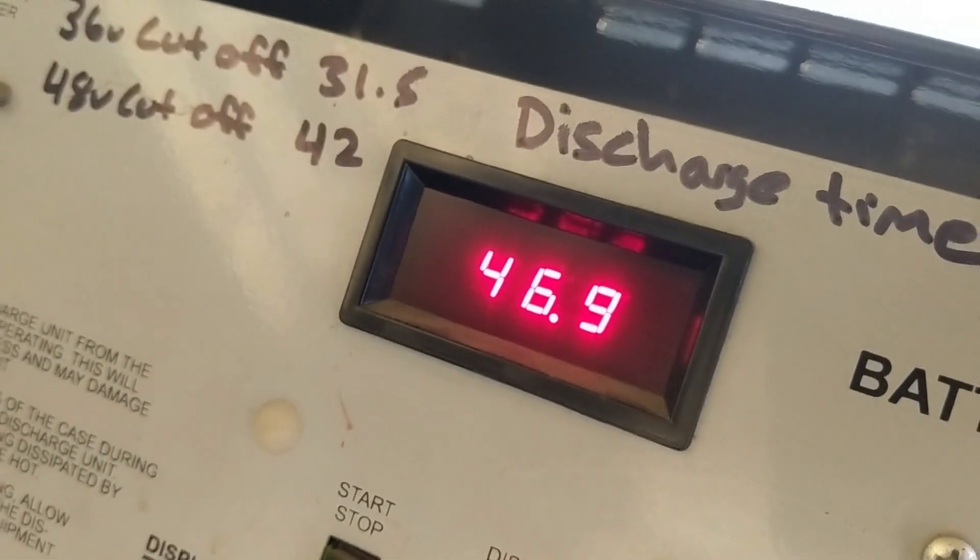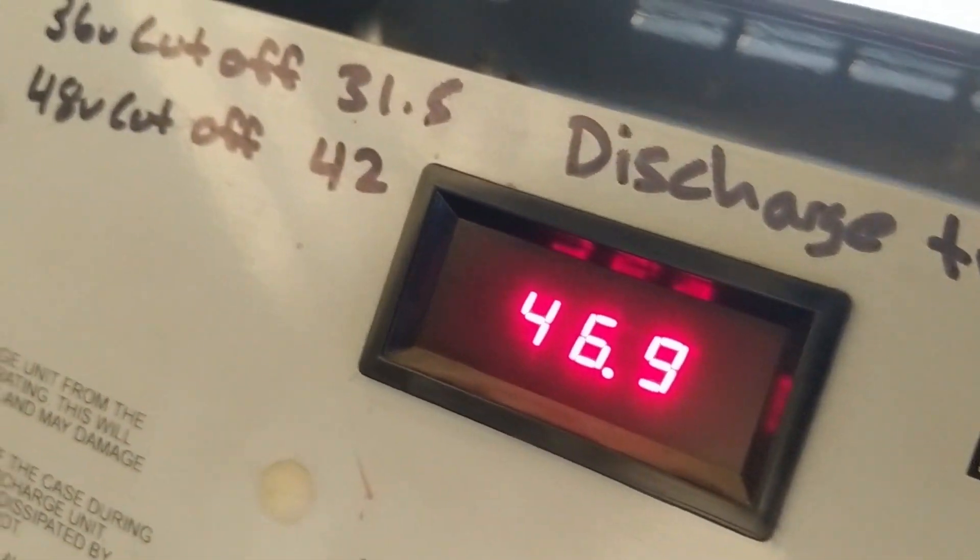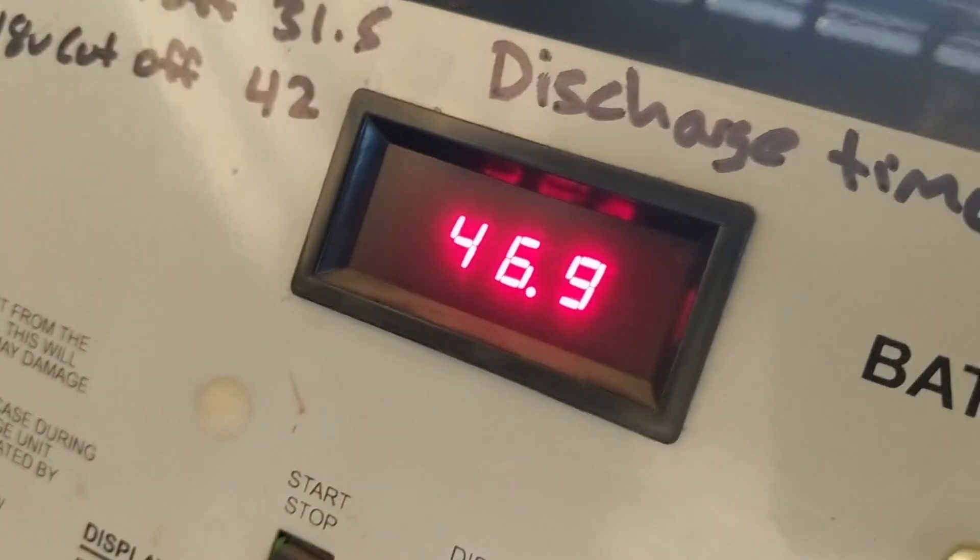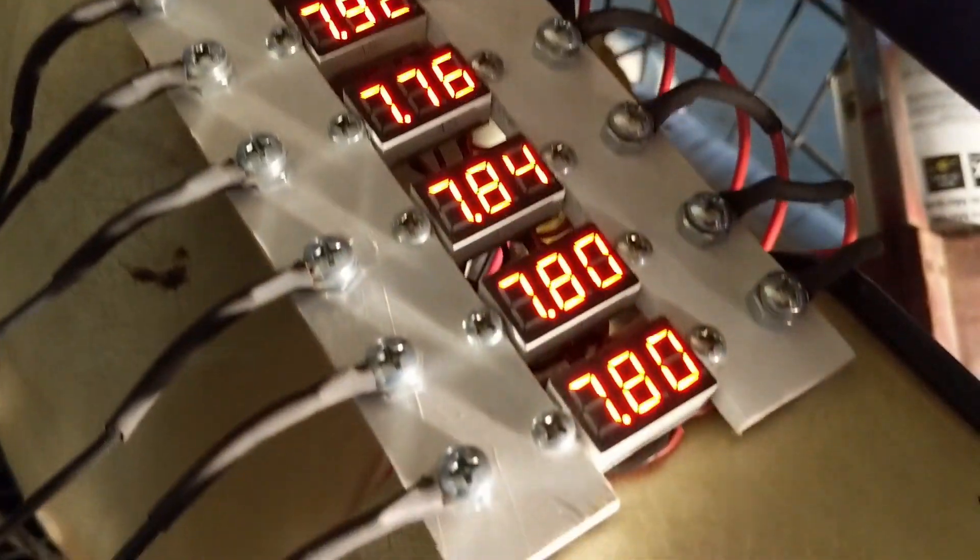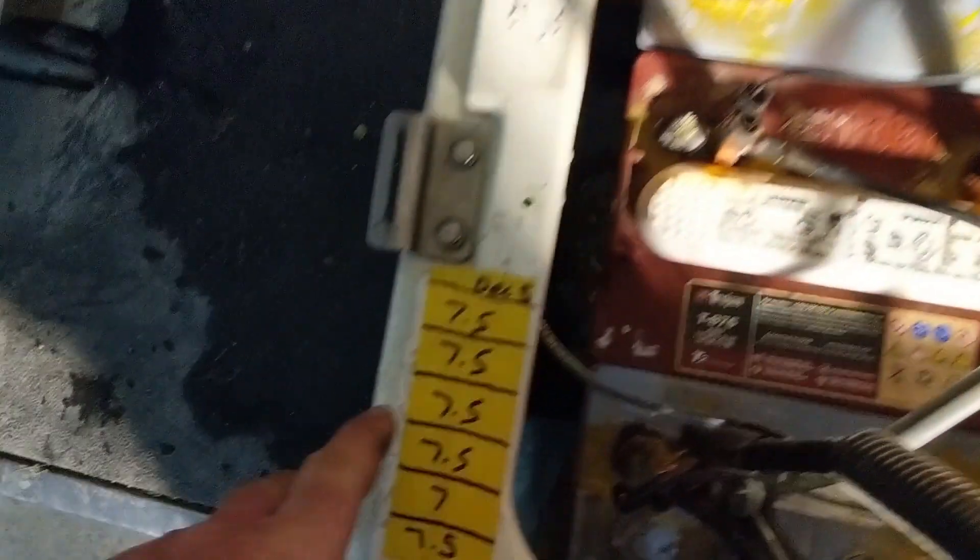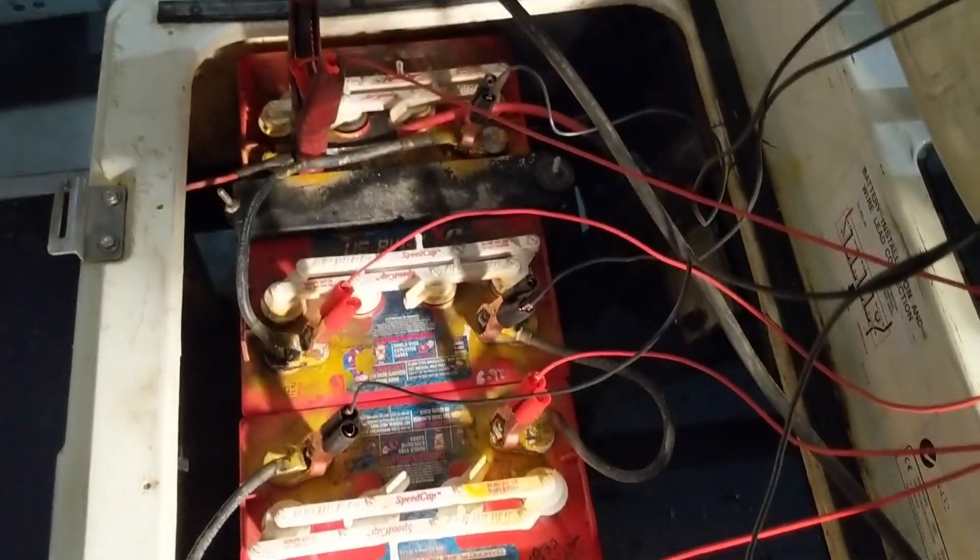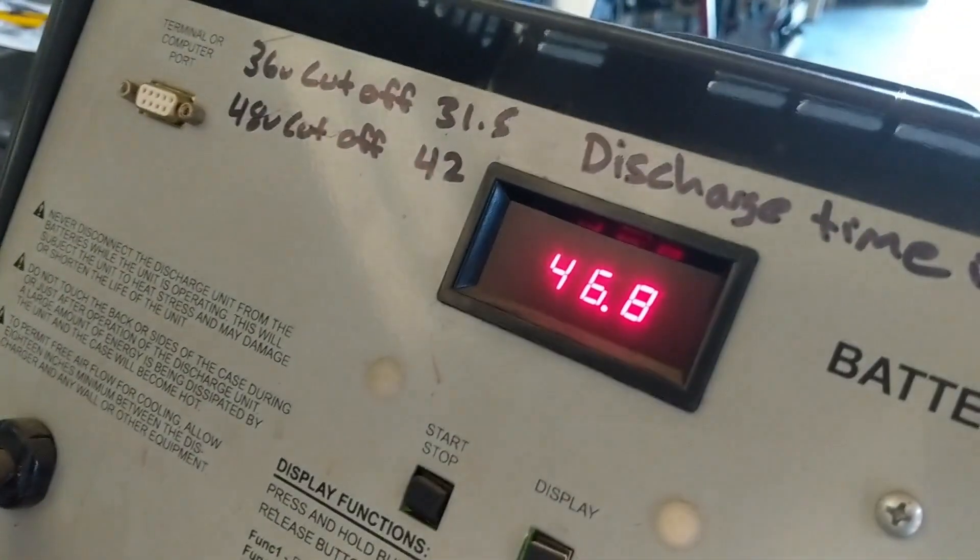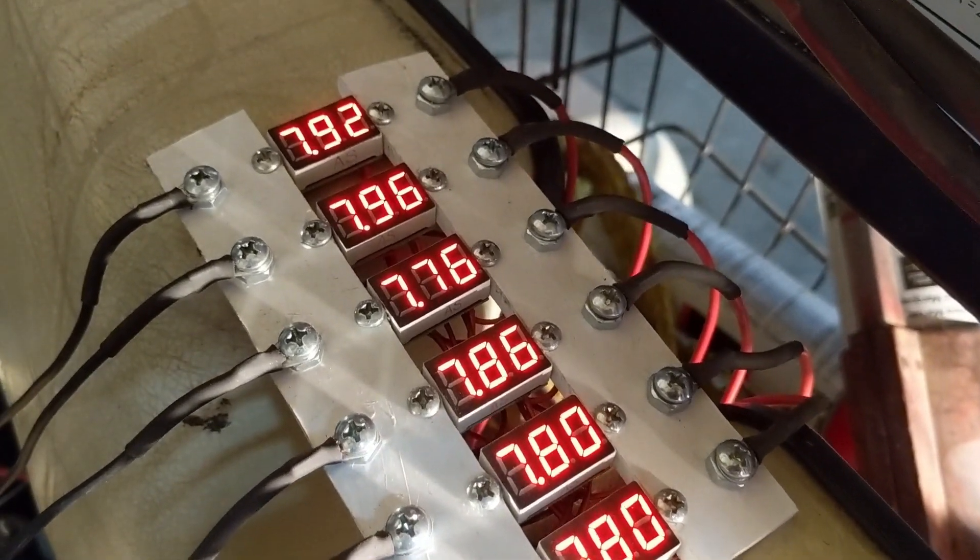If you watch the discharge unit you can see it's already down to 46.9, 47 volts, which is certainly the average total voltage of these batteries. Now it's going to shut off its test at 42 volts, and when we get down to say 42.5 we're going to note the numbers here and update our list with today's date. We'll be able to tell exactly what condition each one of these batteries is in.